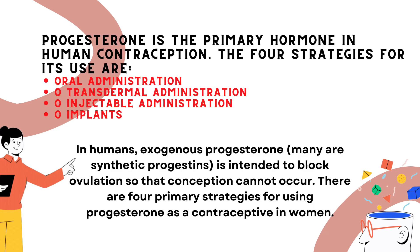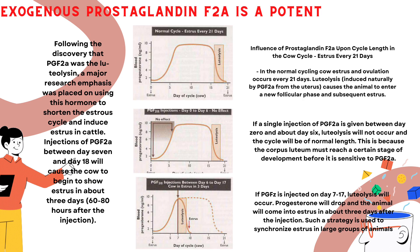Progesterone is the primary hormone in human contraception. The four strategies for its use are oral administration, transdermal administration, injectable administration, and implants. Following the discovery that PGF2α was the luteolysin, a major research emphasis was placed on using this hormone to shorten the estrous cycle and induce estrous in cattle.